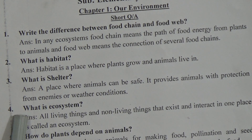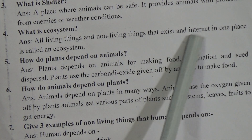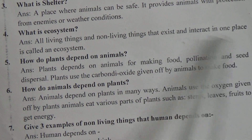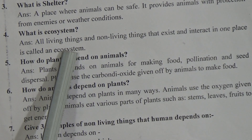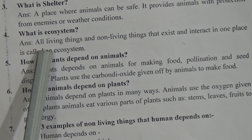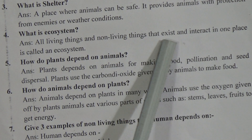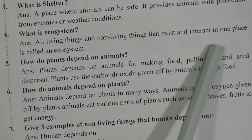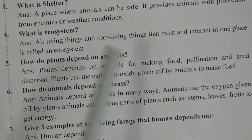Short question number 4: What is ecosystem? All living things and non-living things that exist and interact in one place is called an ecosystem.